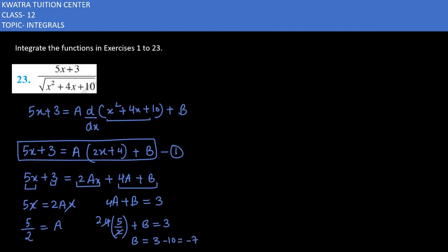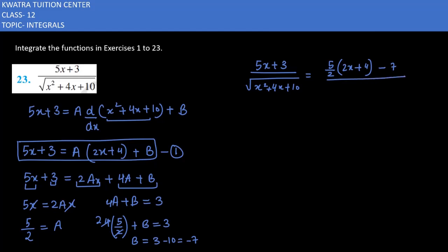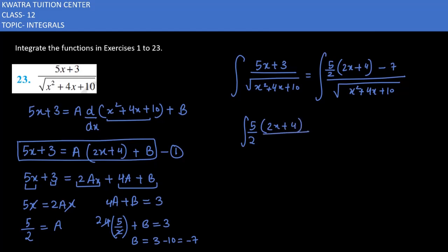Now we substitute the values of A and B into the original integral. So the integral of (5x + 3)/√(x² + 4x + 10) becomes: (5/2) integral of (2x + 4)/√(x² + 4x + 10) dx, minus 7 integral of dx/√(x² + 4x + 10). अब right side को simplify करते हैं।